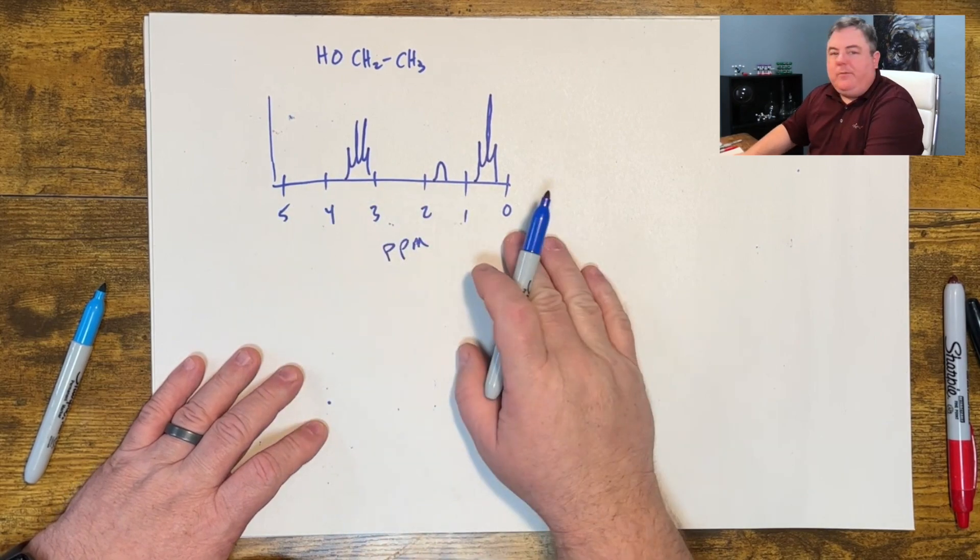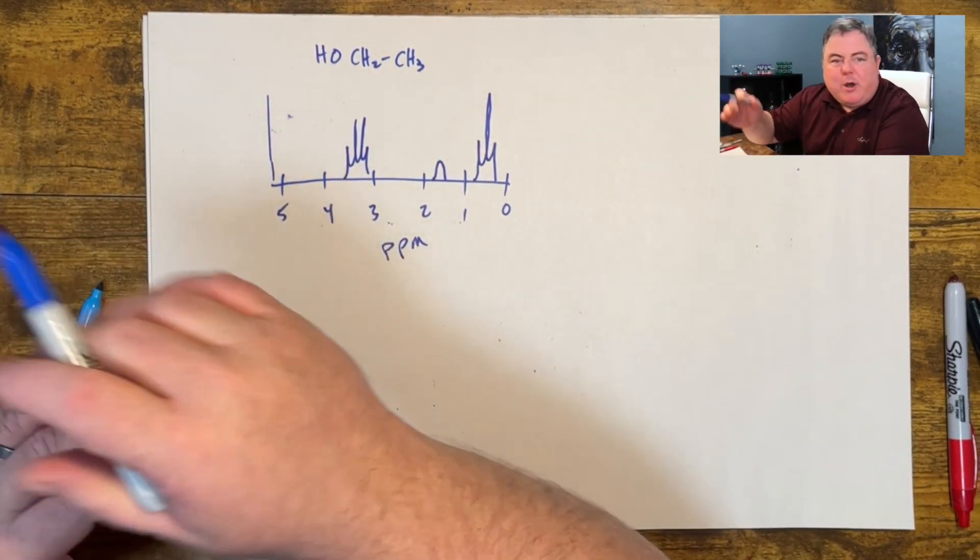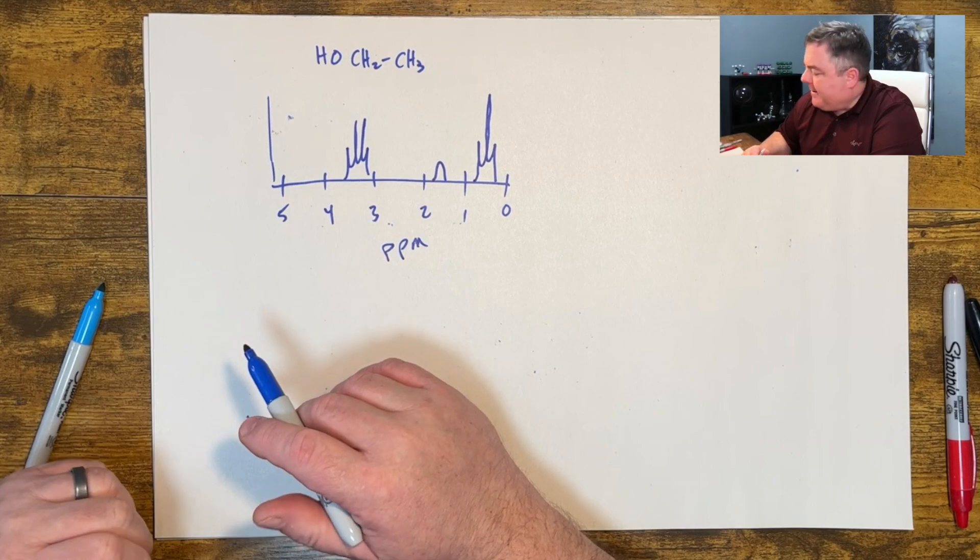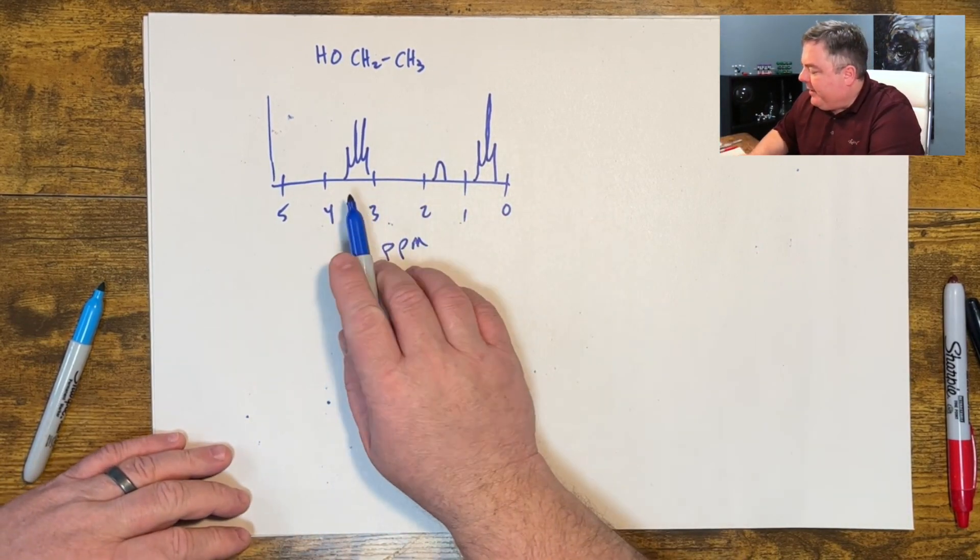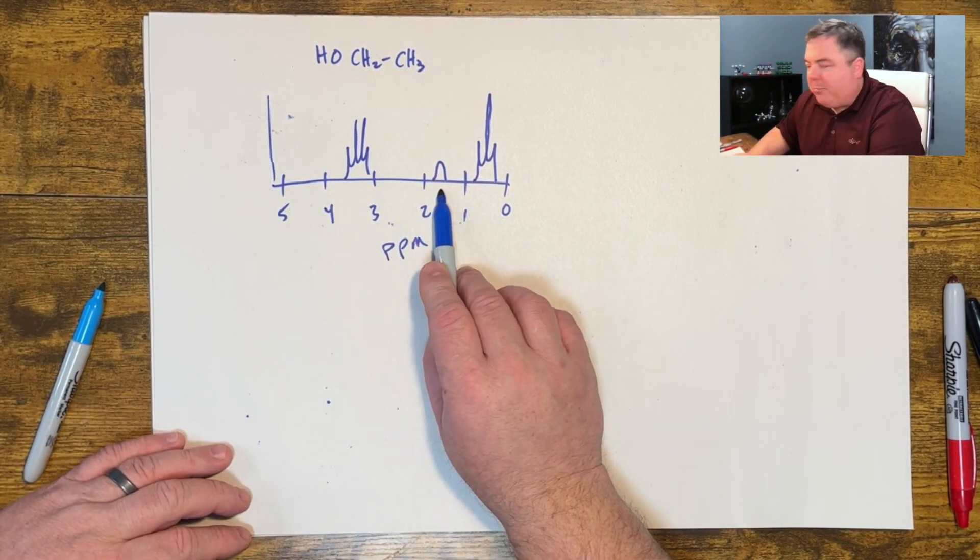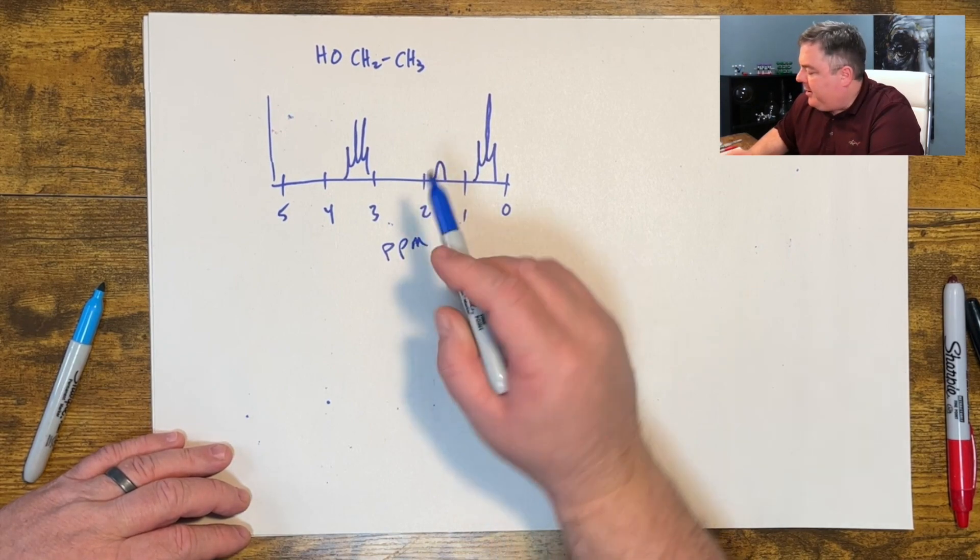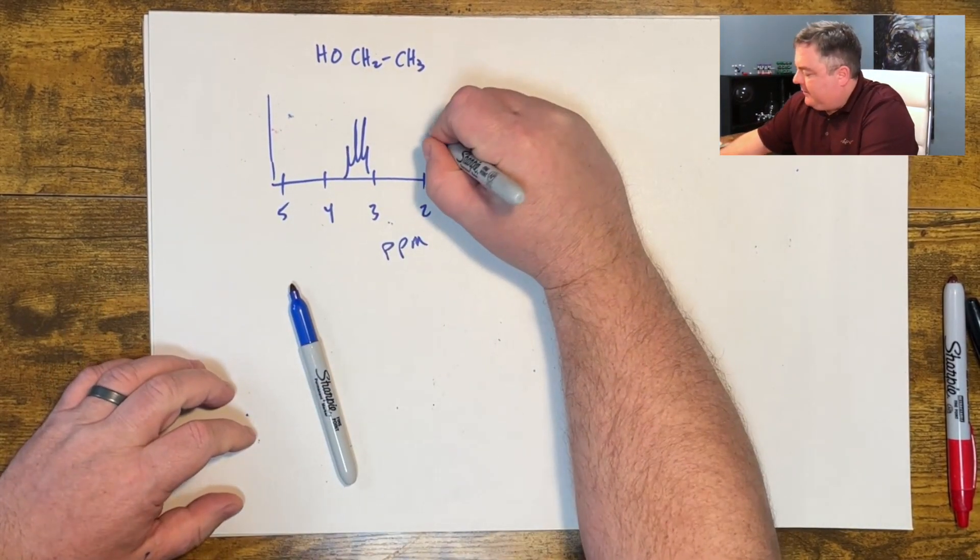Now if we see a spectrum like this and there's the big broad peak at 3300 in the IR, we think we have an alcohol. If I were to look at this, the broad blobby peak would be the OH peak, the hydrogen.